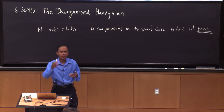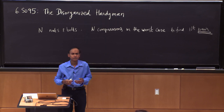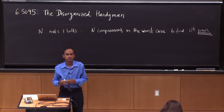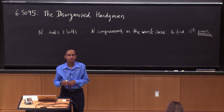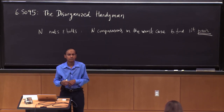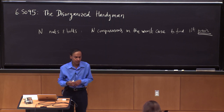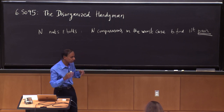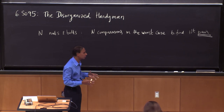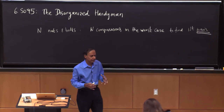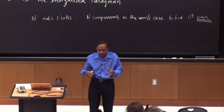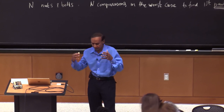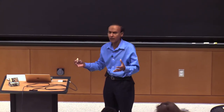What is the complexity in terms of the growth rate of this algorithm? If I had N nuts and bolts, then I do N comparisons in the worst case to find the first pair — meaning the correct pairing associated with a given nut and bolt.